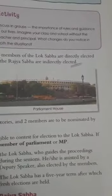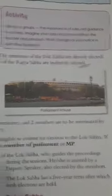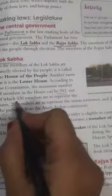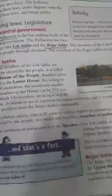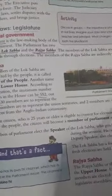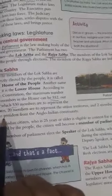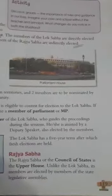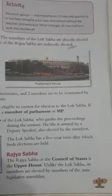Lok Sabha is also known as the Lower House. According to the Constitution, the maximum number of members in the house is 552, out of which 530 members represent the states, 20 members represent the union territories, and 2 members are nominated by the President from the Anglo-Indian community.